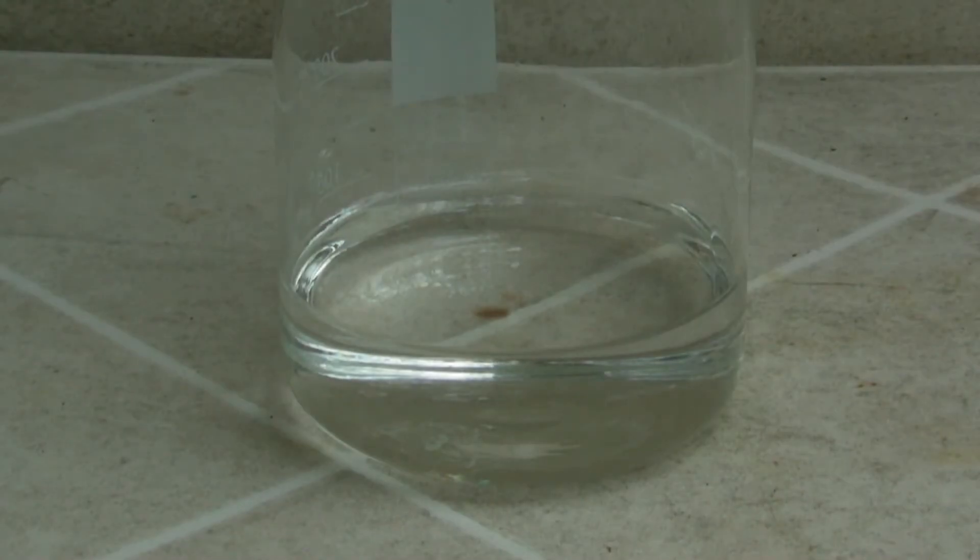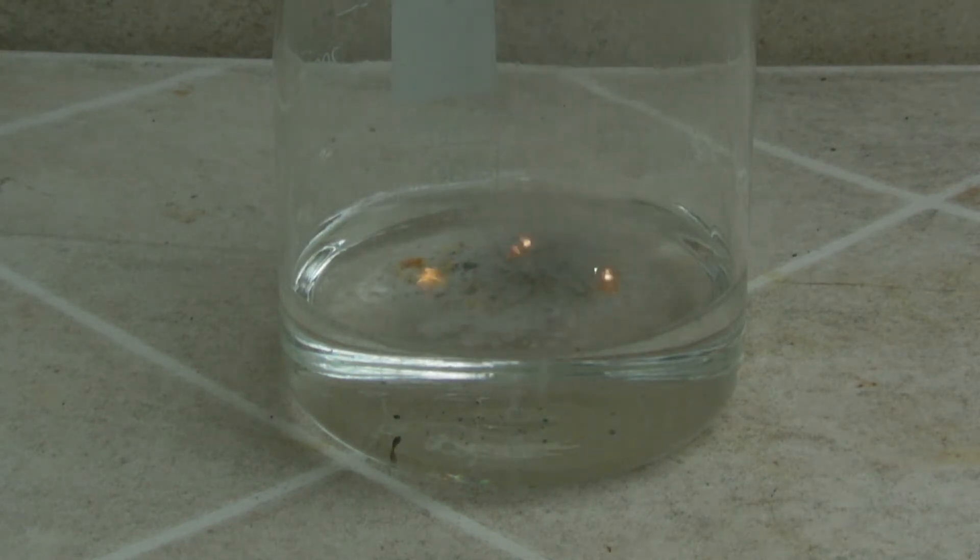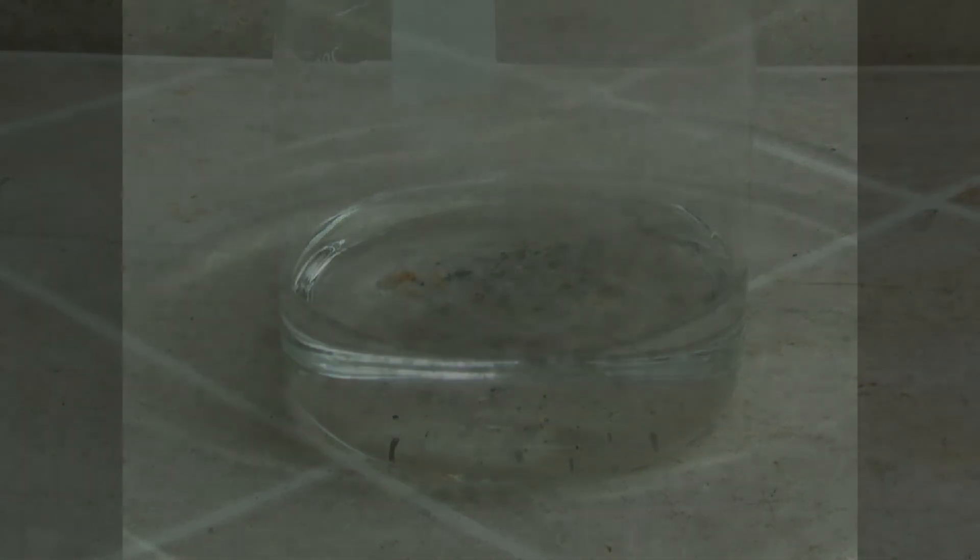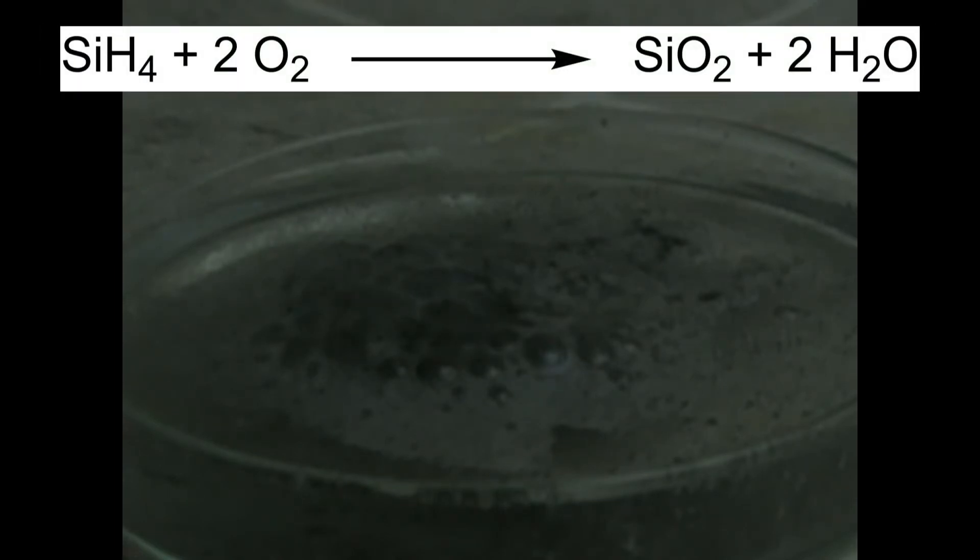Then a part of the magnesium silicide is added to 10% hydrochloric acid. The magnesium silicide reacts with the hydrochloric acid to form monosilane and magnesium chloride. The monosilane is pyrophoric and reacts with the air to form silicon dioxide and water in an exothermic reaction.